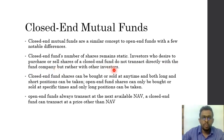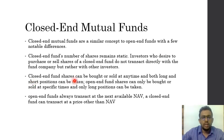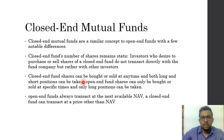In an open-ended mutual fund, when an investor wants to exit, they ask the company to redeem their units and receive a check, reducing the number of units. In a closed-ended fund, the investor transacts with other investors, giving them the units in return for money. Closed-ended fund shares can be bought and sold at any time, unlike open-ended mutual funds which can only be bought at a specific time. Both long and short positions can be taken, whereas open-ended mutual funds only allow long positions.